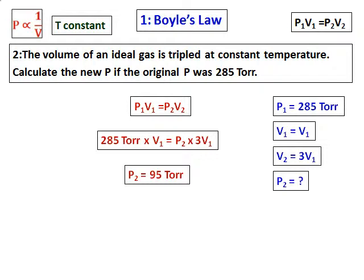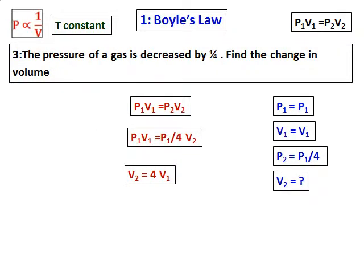Another question on Boyle's law: the pressure of a gas is decreased by one fourth; find the change in volume. Use the same formula P1V1 = P2V2. Let the initial pressure be P1 and the initial volume be V1.